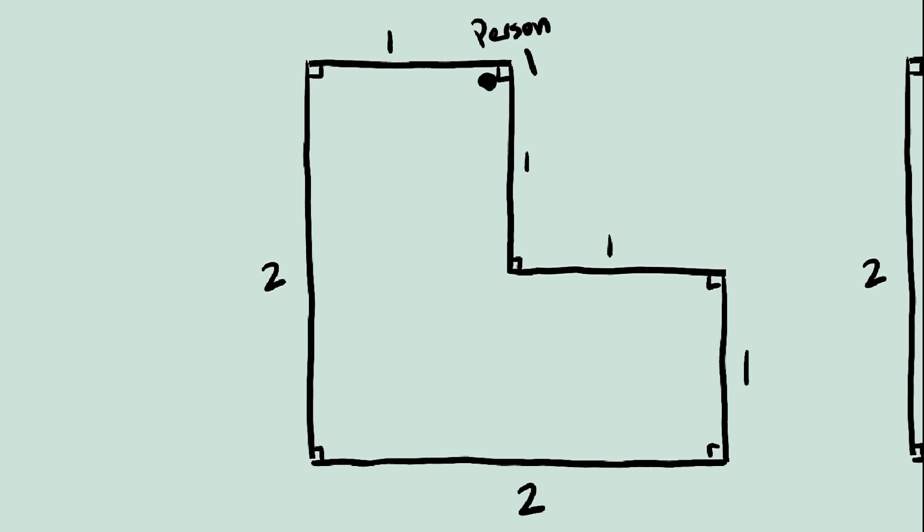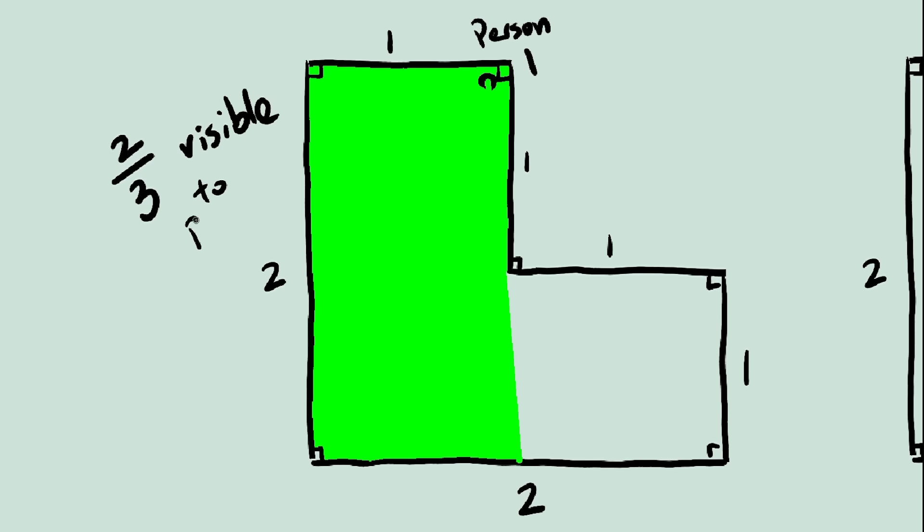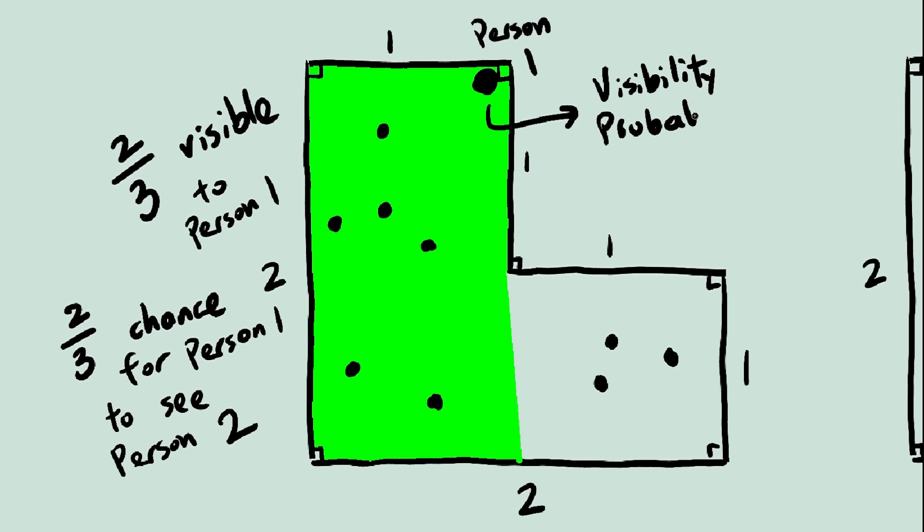On the other hand, if person 1 is in this corner over here, they can only see about 2 thirds of the shape's area. So person 2 has a 2 in 3 chance of being in person 1's visibility. So if person 1's random location is here, the probability of visibility is 2 thirds.